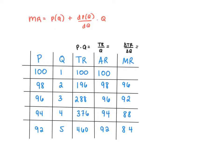I now want to explain the intuition of this equation — that marginal revenue equals price plus dP/dQ times Q. For this intuition, let's consider a simple chart. In the first two columns, I present a basic demand schedule, that is, some values of quantity and price off of a demand curve. This chart shows that if the monopolist charges a price of $100, the quantity demanded will be 1, and the monopolist will sell 1 unit. Total revenue is price times quantity, so at a price of $100 and quantity of 1, total revenue is $100.